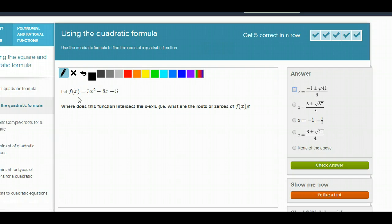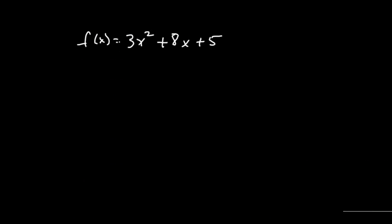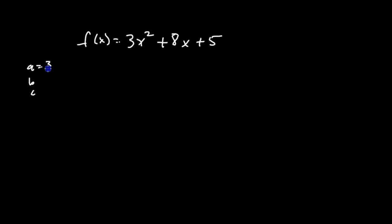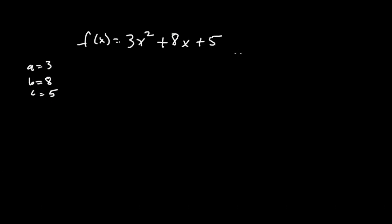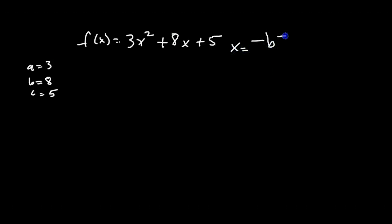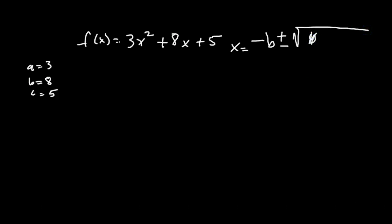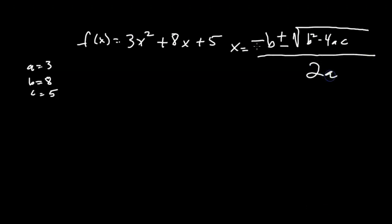Here we have a function f of x is 3x squared plus 8x plus 5. So a, b, and c in this case are going to be 3, 8, and 5. And we'll put them into the quadratic formula, which tells me that x is the opposite of b plus or minus the square root of b squared minus 4ac, all of it over 2 times a.